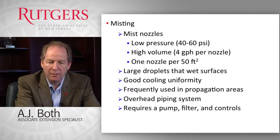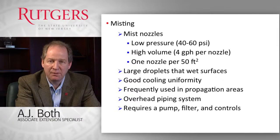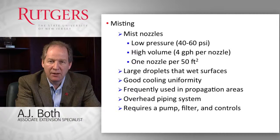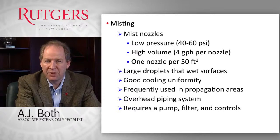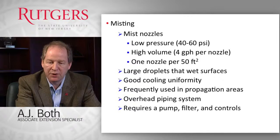Misting systems provide pretty good cooling uniformity — perhaps better than the evaporative cooling pad — because we can put those nozzles throughout the greenhouse environment, whereas in the pad and fan system the pad is installed on one side. As air moves through the greenhouse from the ventilation opening towards the fans, it picks up heat energy and heats up, creating some non-uniformity of cooling distribution. We typically deliver water through an overhead piping system, and the system requires a pump, filters to prevent clogging, and controls to operate it.